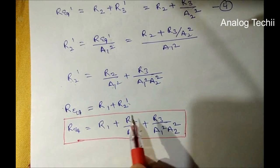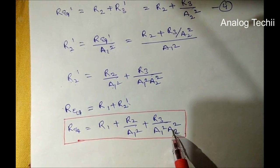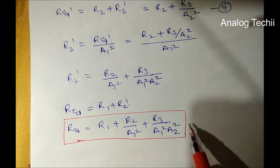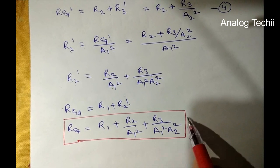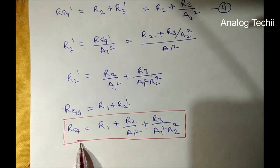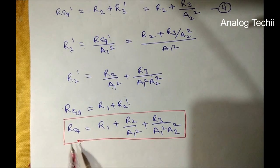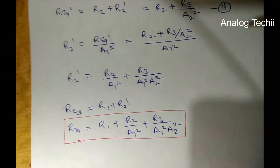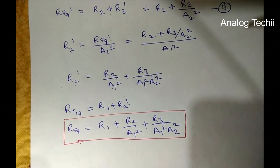The R equivalent resistance is given by: R1' + R2'/A1'² + R3'/(A1'² × A2'²). Similarly, if we have more amplifiers, the resistance terms will extend further — for example, R4 will be divided by A1'² × A2'² × A3'². This is the very important formula for calculating equivalent noise resistance. With this R equivalent resistance, we can calculate the noise voltage due to various sources connected in cascade. Thank you for watching. If you have any doubt, you can watch our previous lectures. Thank you once again.